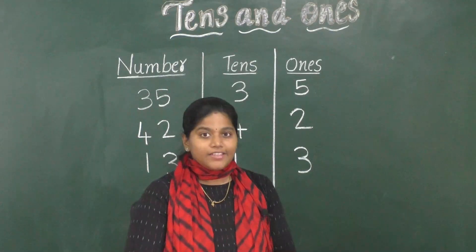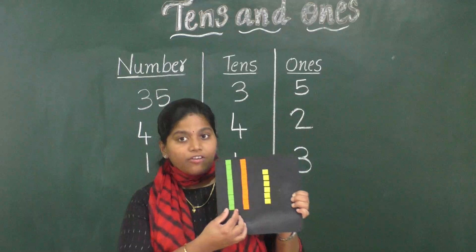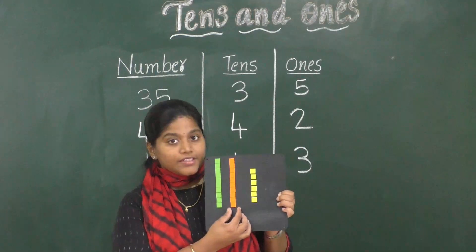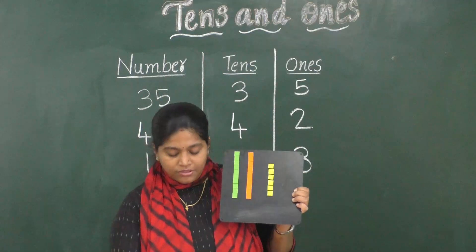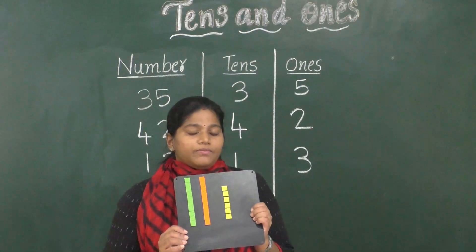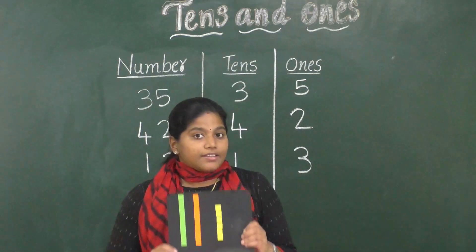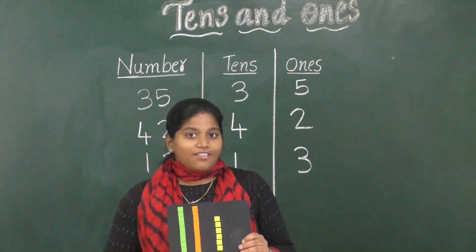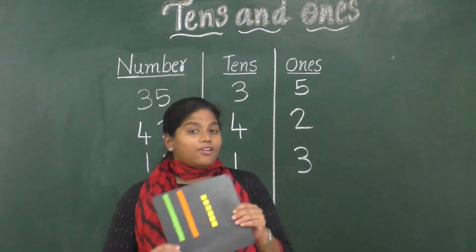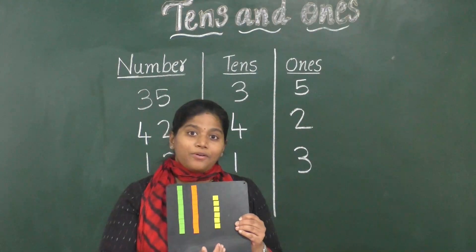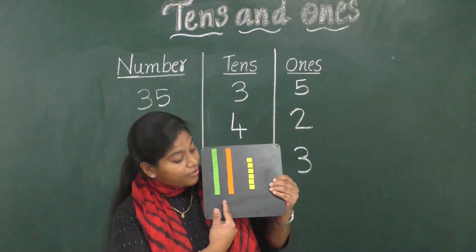Now here I have an activity for you. I have arranged some squares on this magnetic board. Here I have a set of 10 squares, another set of 10 squares, and here we have 6 squares. By seeing this, can you guess the number? Before that, let me sing a song to help you understand this concept. Tens are tall and ones are small. First you count up all the tens.